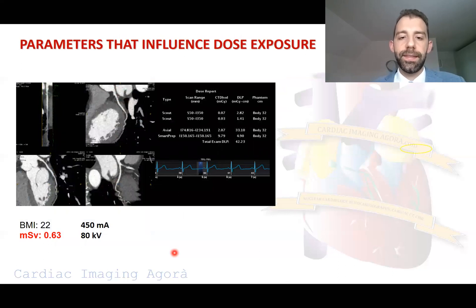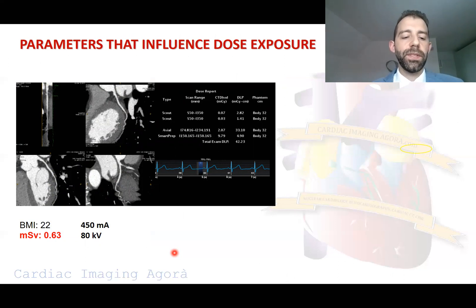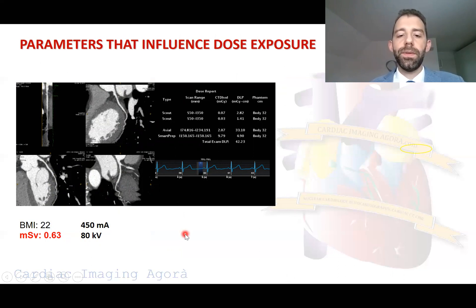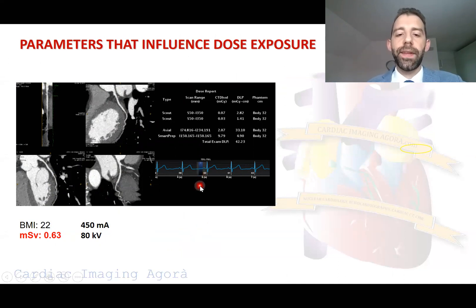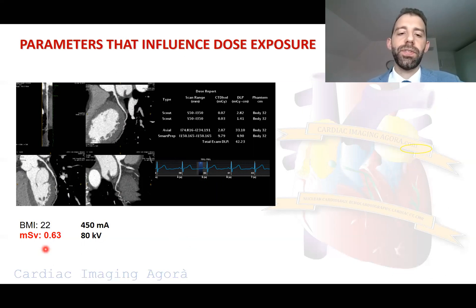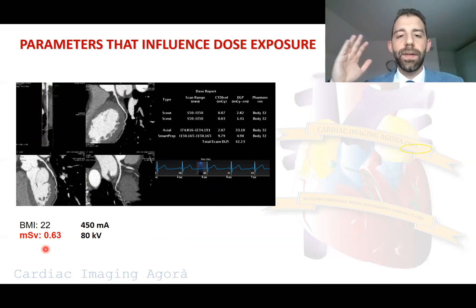To do this, it is fundamental to reduce the heart rate as much as possible. Here is a nice case of a young patient with a BMI of 22 in which we could use a very low tube current and tube voltage. More importantly, because the heart rate was less than 60 BPM, we used a prospective acquisition in just one phase of the cardiac cycle. This resulted in only 0.63 mSv of radiation dose. The message is: if you want to get nice images and reduce radiation dose, the first step is to reduce heart rate and use beta blockers.